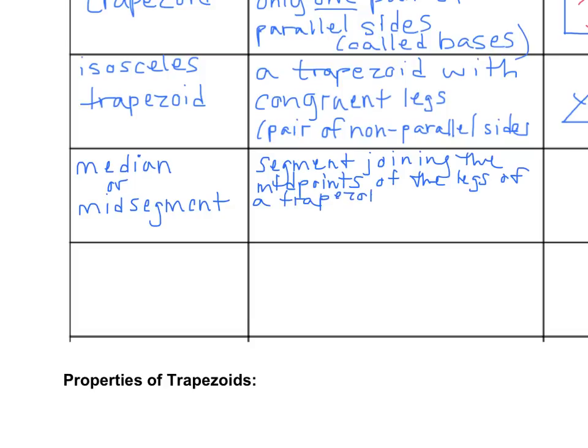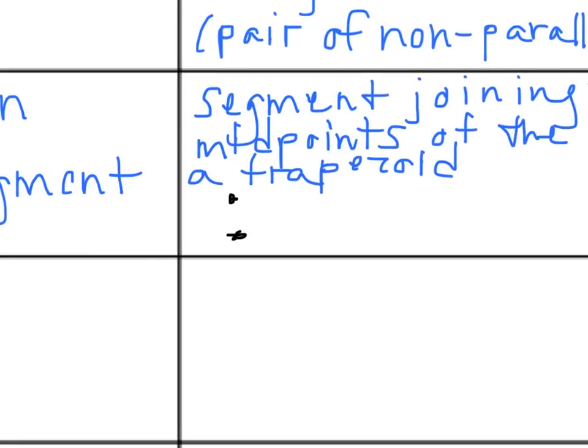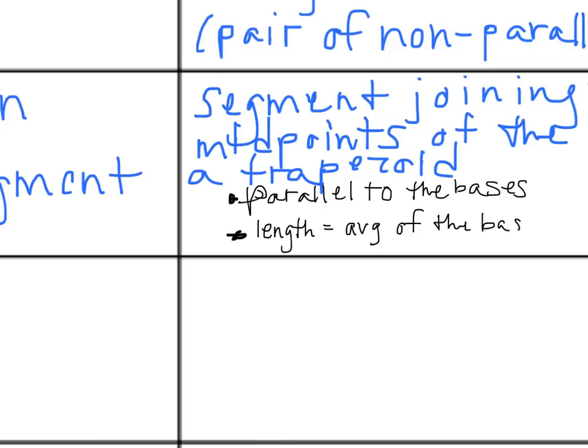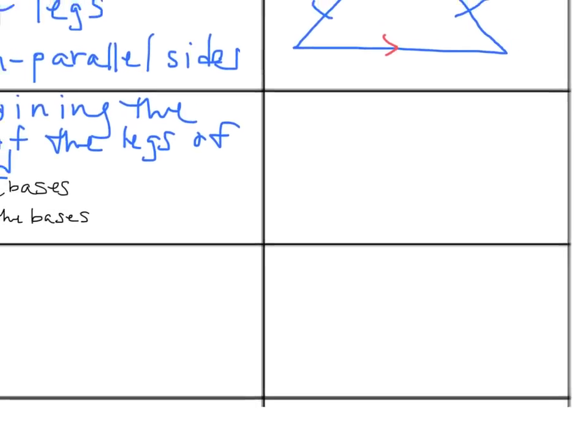We're going to be calculating some examples using a mid-segment in a second. So there's two things you need to know about that mid-segment. The first thing is the mid-segment of a trapezoid is going to be parallel to those bases. So it kind of makes a third parallel line, cutting right through the middle of it. And in addition, we can calculate its length by taking the average of the bases themselves. So it's in the middle between the two lengths of the bases, or the average.